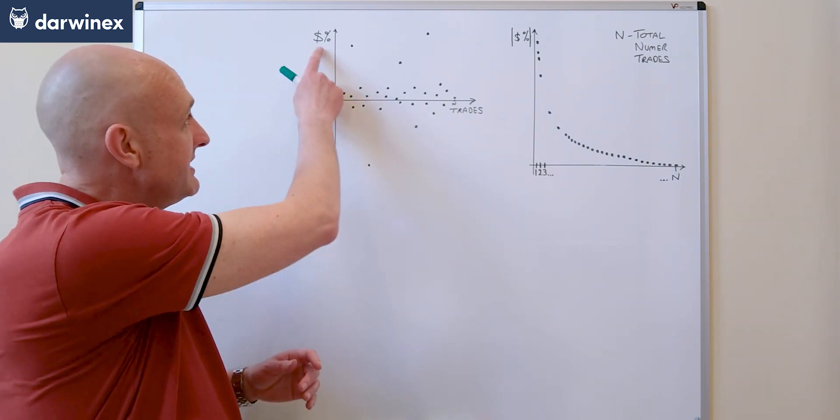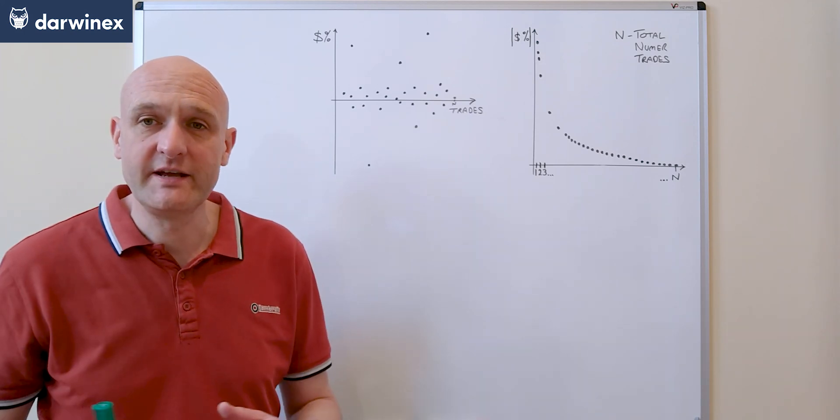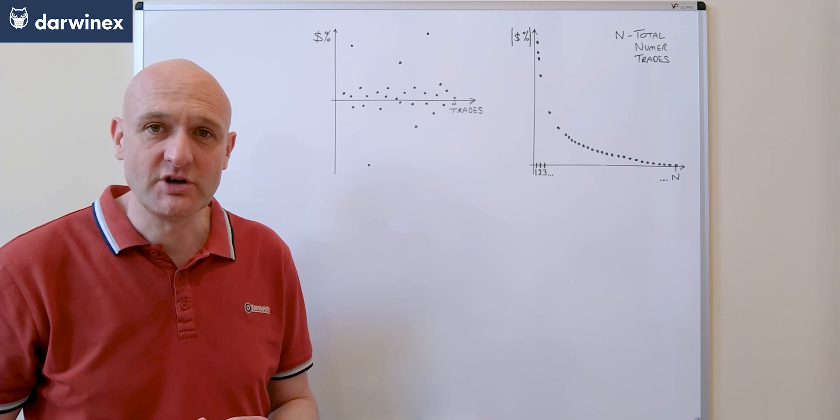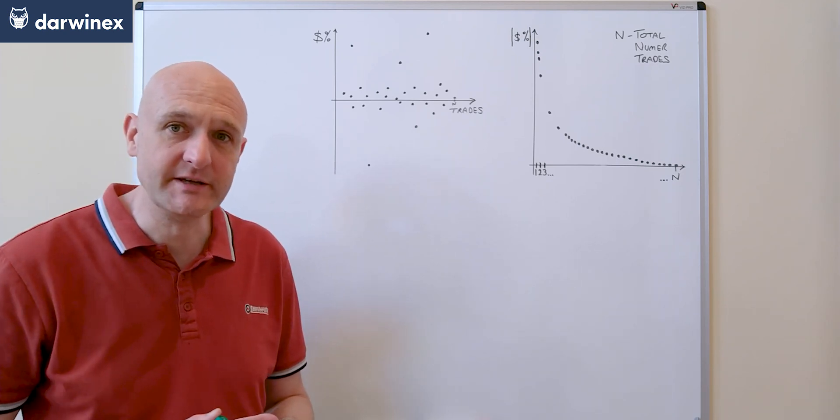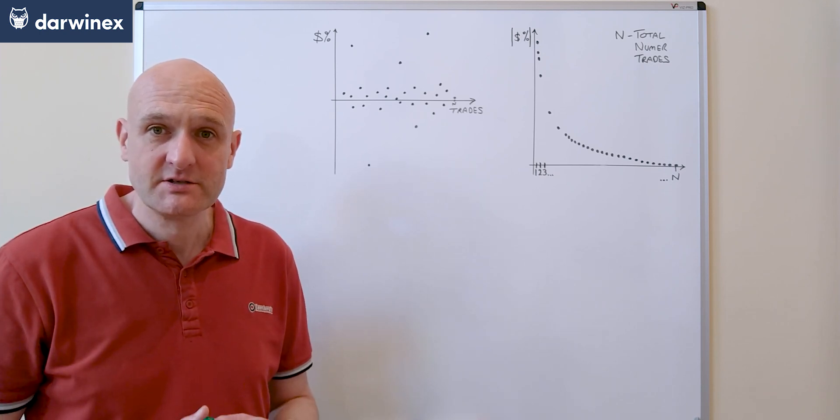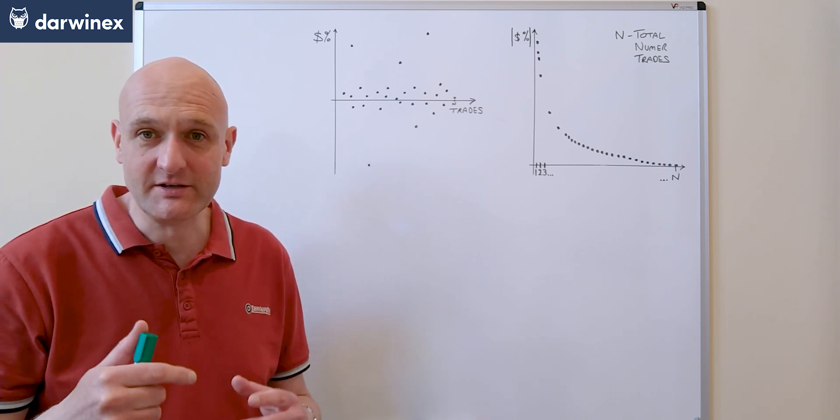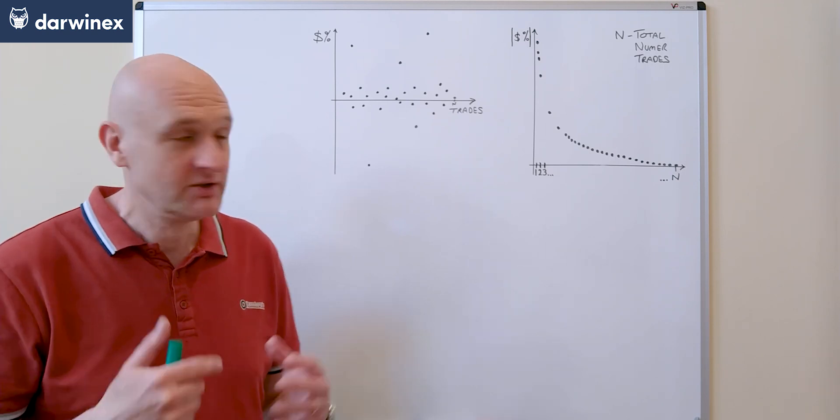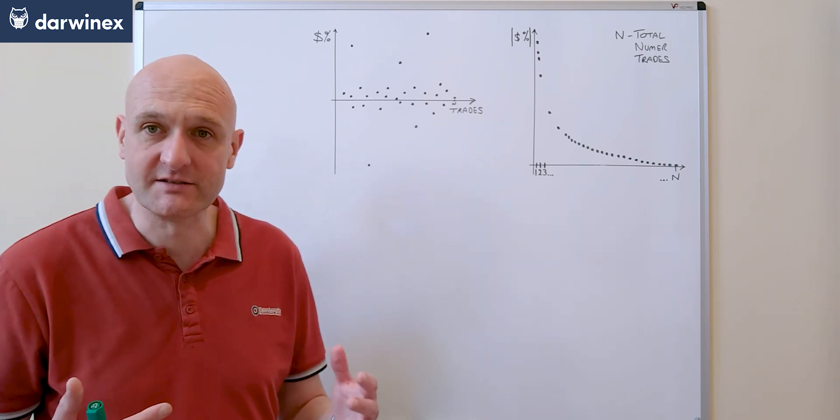Now notice how I'm displaying the size of the trade here—the profit or the loss as a percentage of equity at the time of the trade. This is because I scale my position size relative to equity, so scaling back down by using a percentage means that trades with larger position sizes don't get disproportionately represented on the chart.